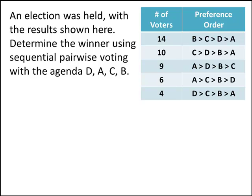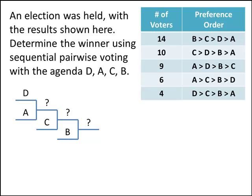The way sequential pairwise voting works is we have a series of one-on-one matchups. We take the first two candidates in the agenda and match them up against each other. This will be a one-on-one election just like the ones we studied when we did the Condorcet method. Whoever wins that matchup will go up against the next candidate in the agenda, and so on, until we reach the end of the agenda. The winner of the last matchup will be the winner of our election.